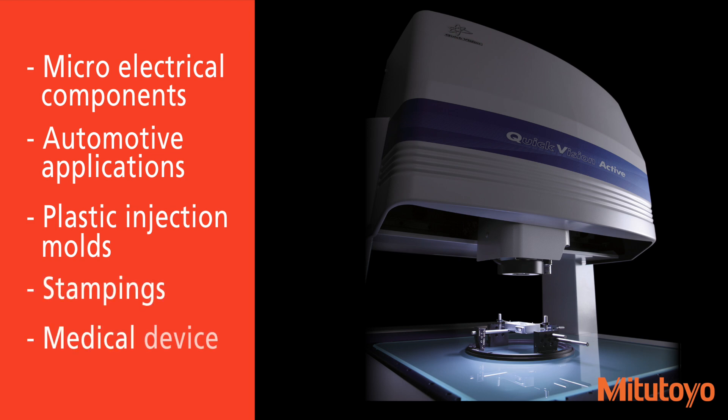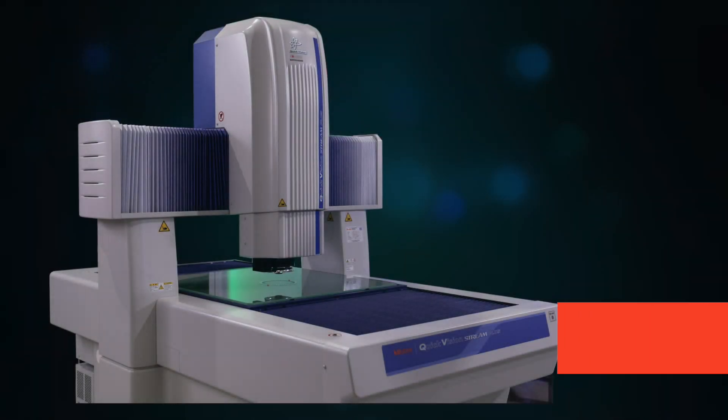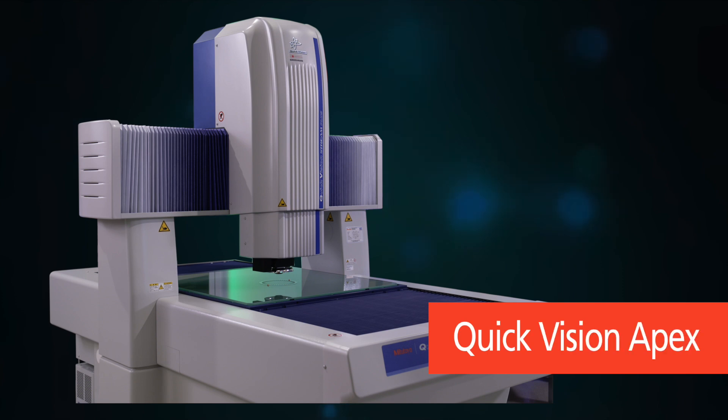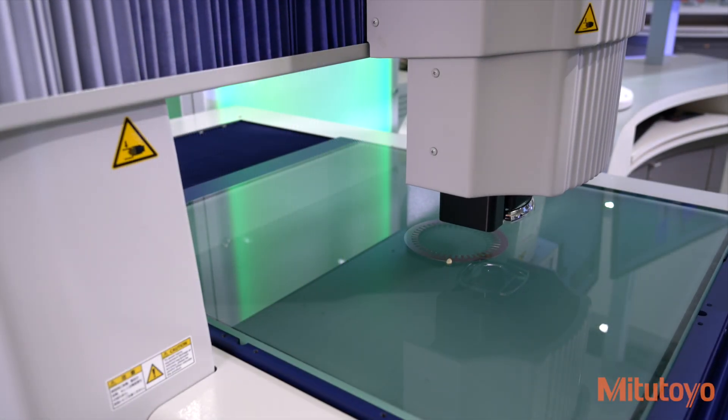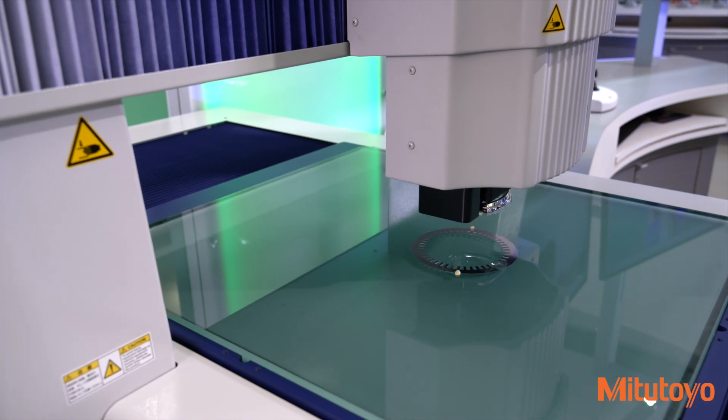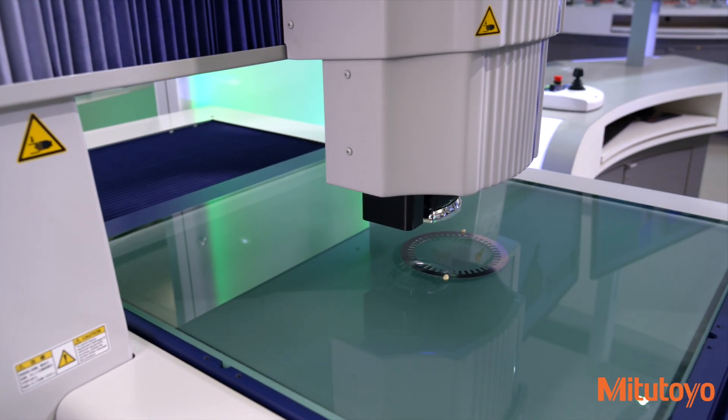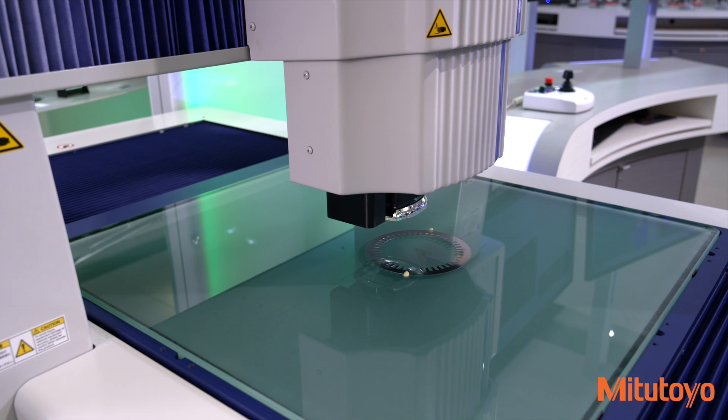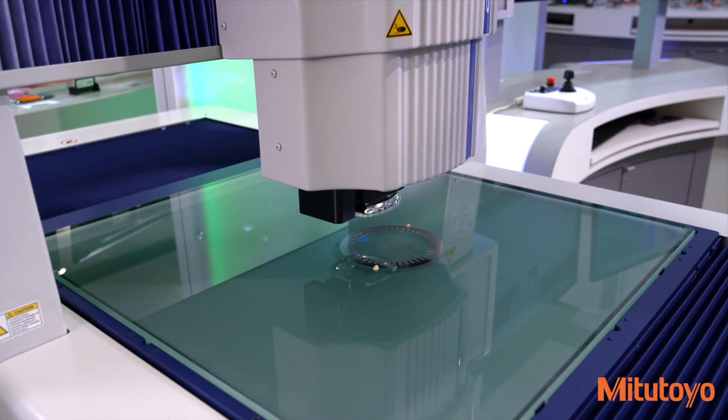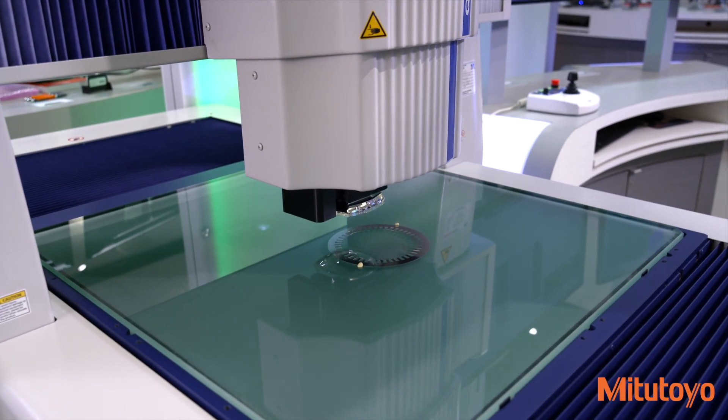The quick vision apex is a high accuracy floor standing CNC vision measuring system designed for demanding tasks and vision based measurements. With the QV Apex's image multi-autofocus feature, the optimal focus can be selected for each surface texture and measured feature, realizing high reproducibility and reliable edge detection.